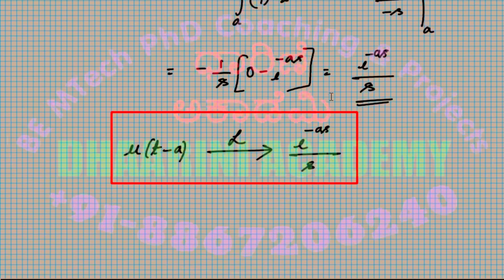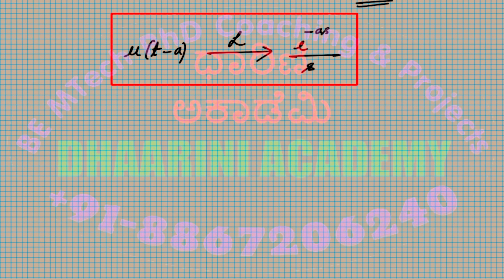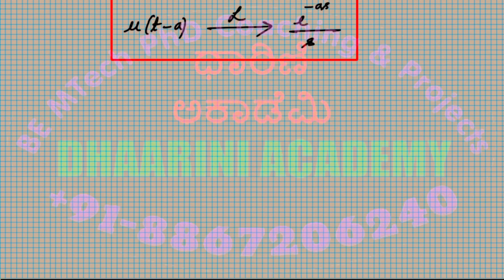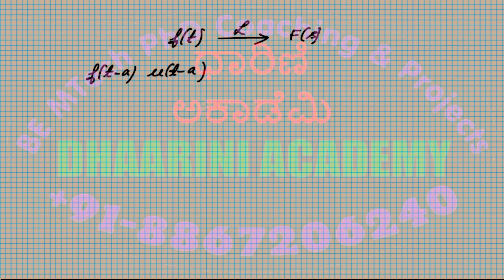The second property: if we have a function f(t) whose Laplace is known as F(s), then if I write f(t minus a) times u(t minus a) — f(t) gets shifted to f(t minus a) and u(t) becomes u(t minus a) — then its Laplace will be e^(minus as) times F(s). This is the property.